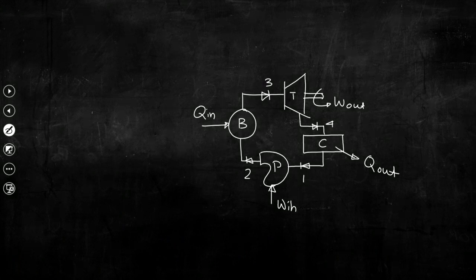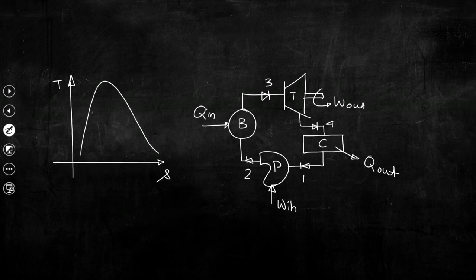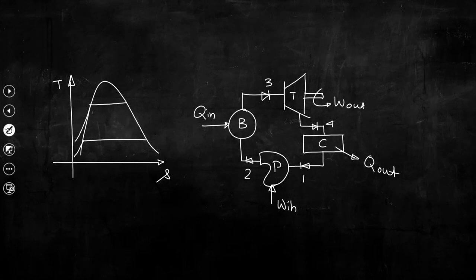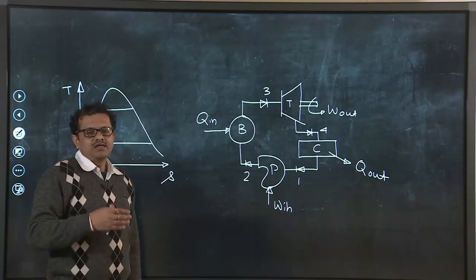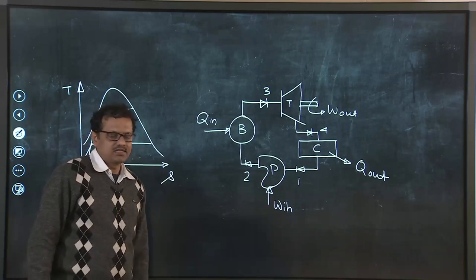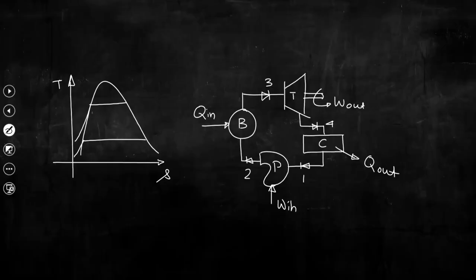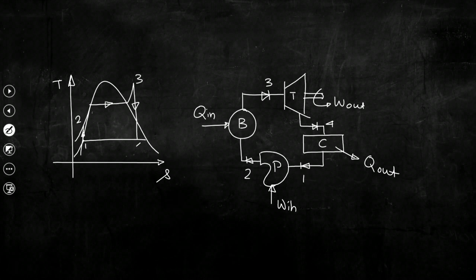The condenser is where exit steam from the turbine is taken. That steam releases heat and gets converted into water, which is then pumped back to the boiler. Now, if we try to draw all these processes in the T-s plane, we consider that this unit is operating following the Rankine cycle with superheated steam. We can see all these processes: points 1, 2, 3, and 4.